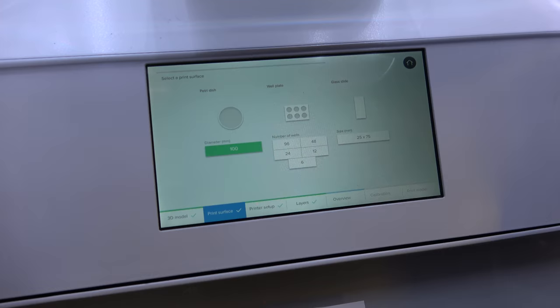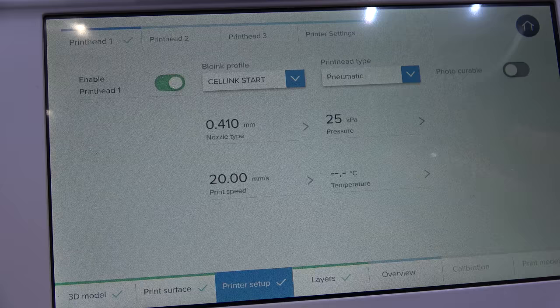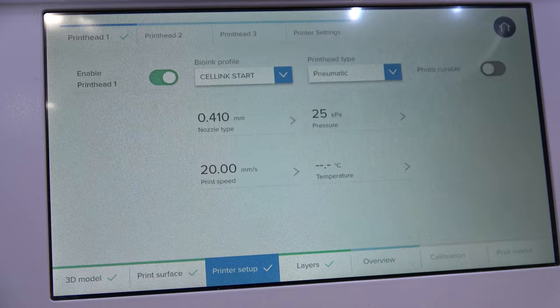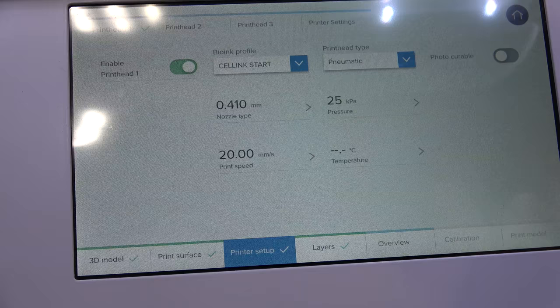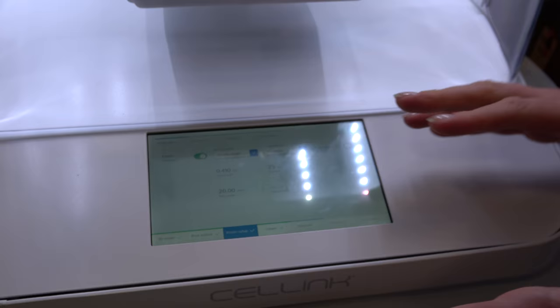The next step is your printer setup. So here you will choose which print head that you want to be enabling. You have three different print heads and also the print surface or the print bed. For this we can choose to print only with one print head. We have CellInk Start as the material that we have in the cartridge. And then it's preset, so all the settings are in there.